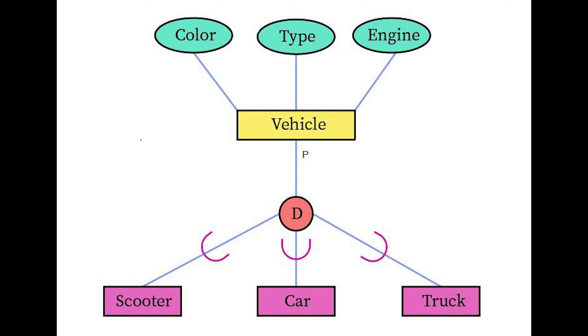Specialization is simply breaking down entity types into its subclasses. For example, an artist entity type can be broken down into musician entity type and painter entity type. This process is a breakdown since painter and musician is an artist, but the opposite doesn't really apply since not all artists are a singer or a painter.